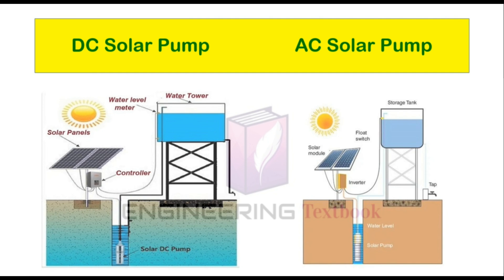In a DC solar pump, the pump has an electric motor that uses direct current. Therefore, no battery or inverter is required. Only the pump controller is attached after the solar panel and between the pump. In an AC solar pump, the electric motor works on alternating current. With the help of an inverter, the direct current produced by the solar panel is converted into alternating current. This conversion can lead to power loss during production and use.